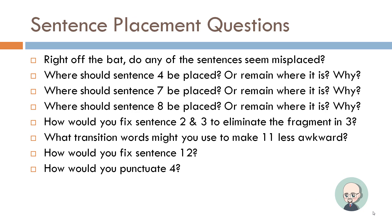We're back. I'm going to give you the questions, and then give you a moment to go through the reading, the passage, and find the answers. Do any of the sentences seem misplaced? Where should sentence four be placed or remain where it is, and why? Where should sentence seven be placed or remain where it is, and why? Where should sentence eight be placed or remain where it is, and why? How would you fix sentences two and three to eliminate the fragment in three? What transition words might you use to make sentence eleven less awkward? How would you fix sentence twelve? How would you punctuate sentence four? No one is going to read along with you on the exam, but this is just for guided practice.